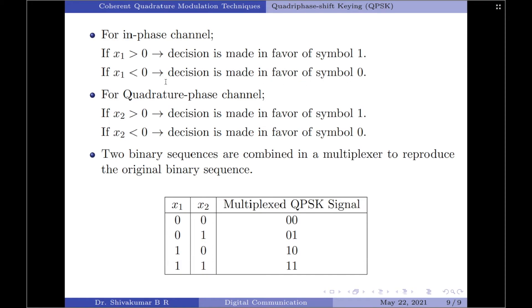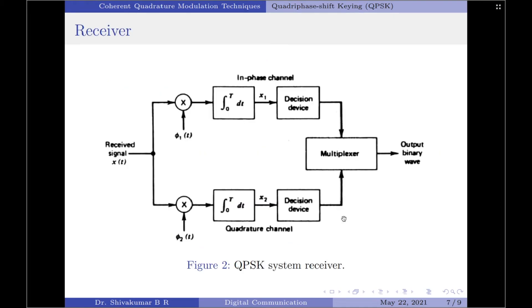A very similar approximation is also applied for the lower channel, which is the quadrature phase channel. So if X2 is greater than 0, decision is made in favor of symbol 1. If X2 is less than 0, decision is made in favor of symbol 0. Finally, these two binary sequences at the in-phase and quadrature channel outputs are combined by using a multiplexer to produce the original binary sequence at the transmitter input with the minimum probability of symbol error.